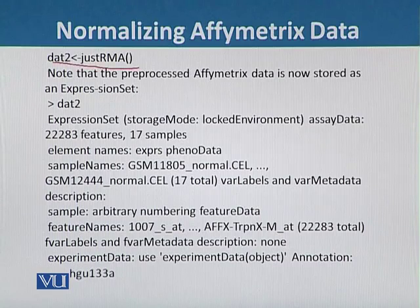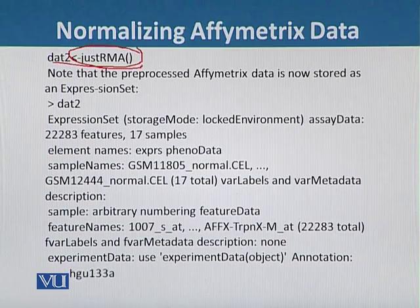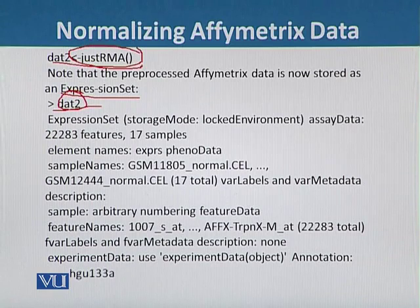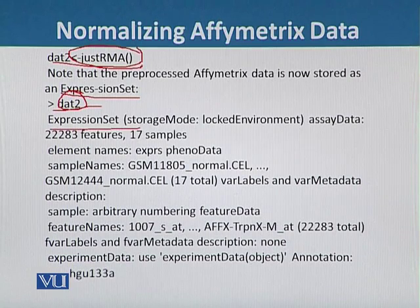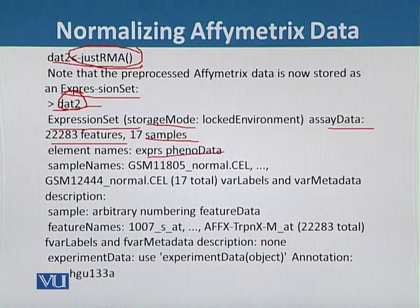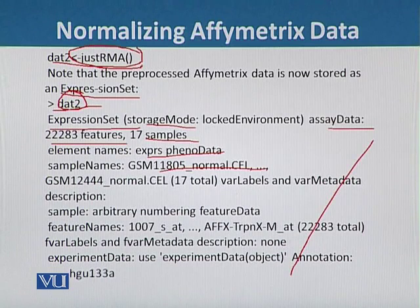We can also use the justRMA command to normalize the FM matrix data, and the output is stored as data2. We should note that the preprocessed FM matrix data is now stored as an expression set. Using data2, we can get information about the expression set — including storage model, assay data, features, samples, element names, and sample names. This allows us to normalize the data and store the results on the computer.